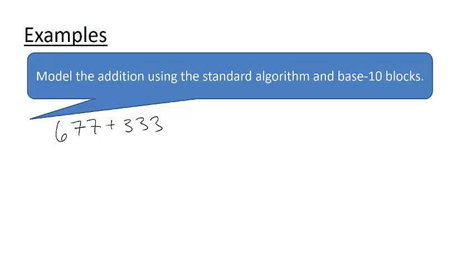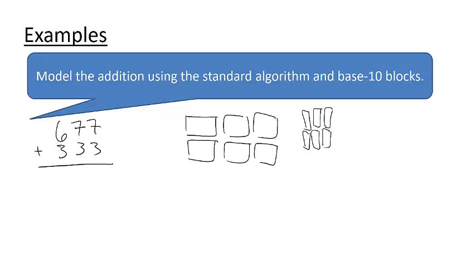Finally, let's model the addition 677 plus 333 using the standard algorithm, as well as base 10 blocks. So first, let's set this up in a stacked fashion. And then we're going to model each one of our addends using base 10 blocks.